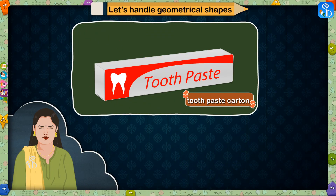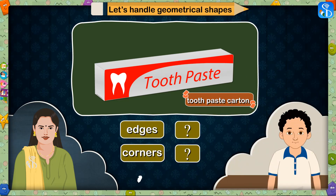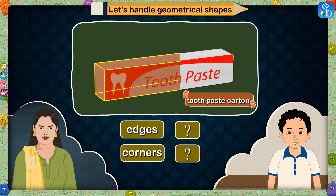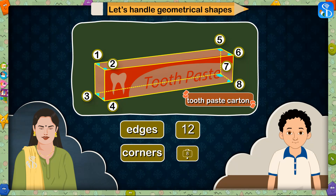This is a toothpaste carton. Tell me how many edges and corners are there in this shape? This shape is known as a cuboid. So it has 12 edges and 8 corners. Good! So we will write 12 edges and 8 corners against the first shape in the chart.